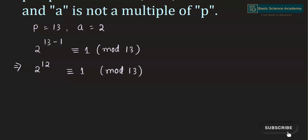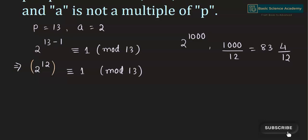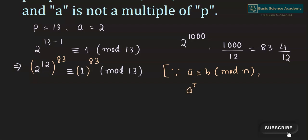Now we need 2 to the power of 1000. When you divide 1000 by 12 it gives 83 with a remainder of 4. Hence we raise both sides to the power of 83, in accordance with the law of modular notation: if a is congruent to b mod n, then a to the power of m is congruent to b to the power of m mod n.